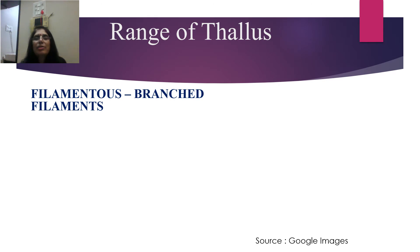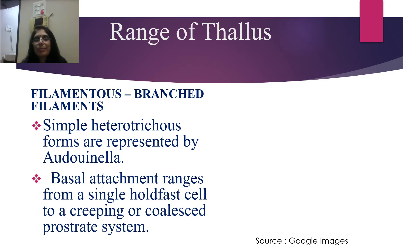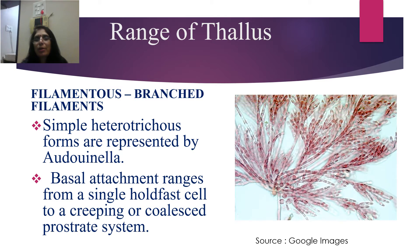Now we move to the other types: filamentous and branched filaments. These simple heterotrichous forms are represented by Audouinella. Basal attachment ranges from a single holdfast cell to a creeping or coalesced prostrate system. Example is Audouinella — you can see it here.